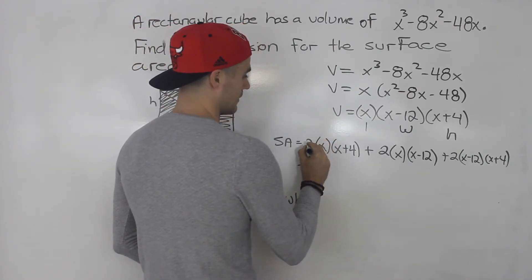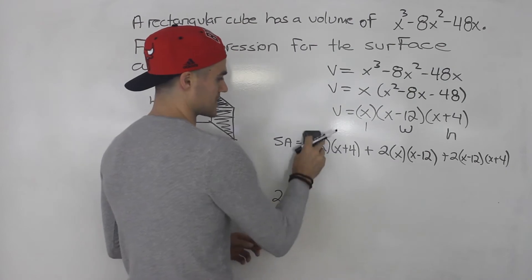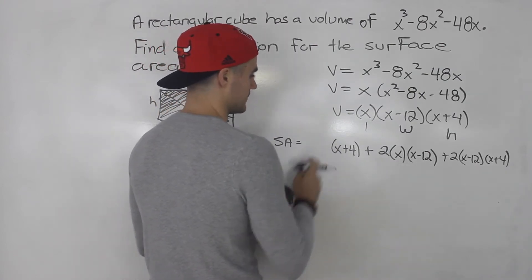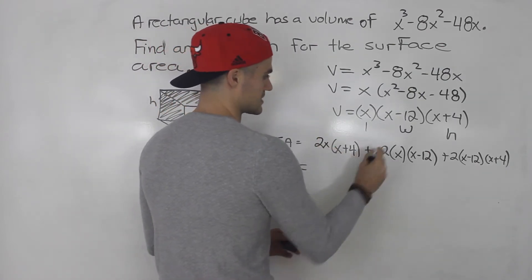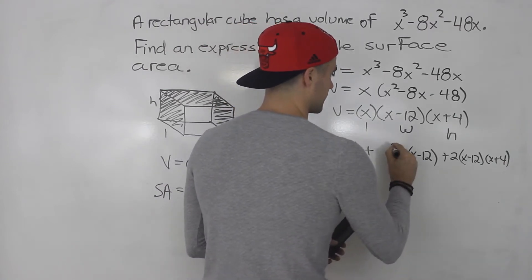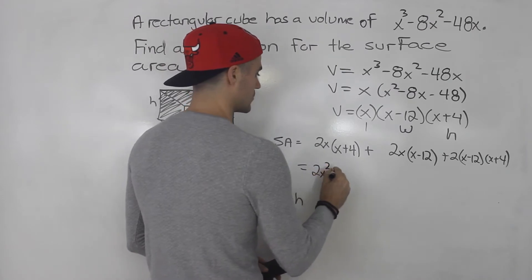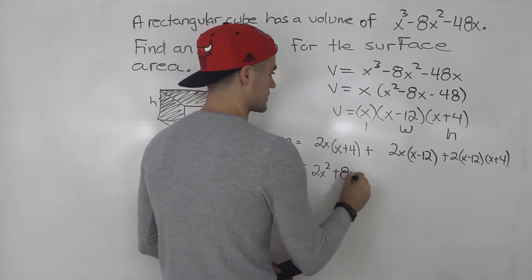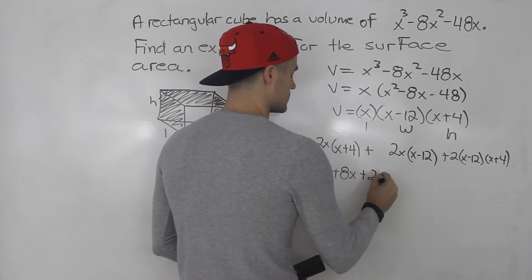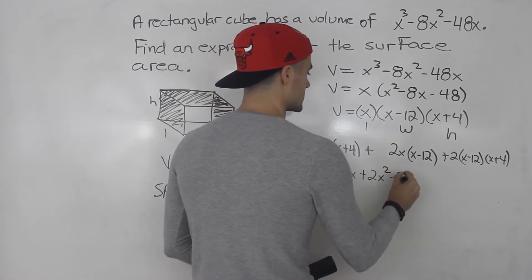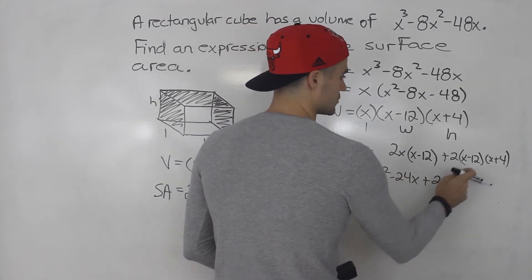So if we do that, this is like a 2x here. So 2 times x, that's like 2x in front. Same thing here. This is like a 2x. So we could distribute inside the bracket. So we'd have 2x squared plus 8x plus 2x squared minus 24x plus 2.